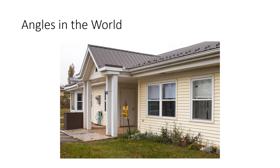If you want to think about why this is useful — why do we care about trigonometry — angles show up in the real world all over the place. For example, here we have a house and we could think of the angles formed by the roof, the angles formed by the windows, or the angle between a post and the ground. Trigonometry is a way for us to use angles to perform calculations that let us design objects involving angles and triangles, so there really are a lot of applications to these ideas.